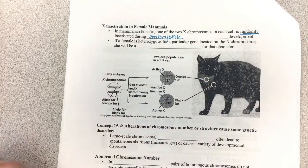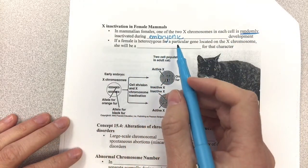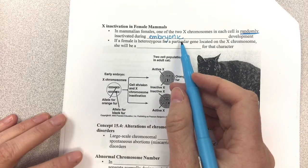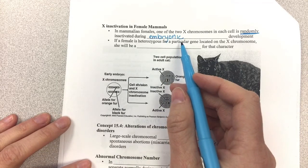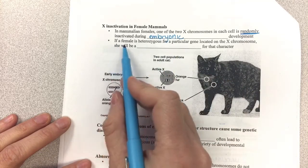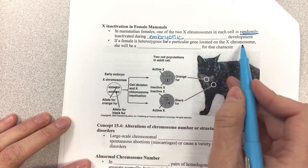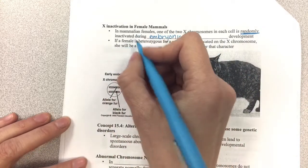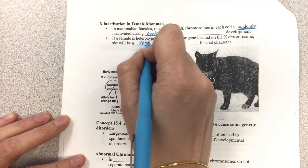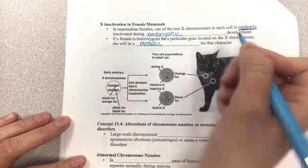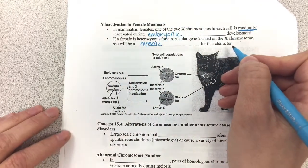So what happens is, it doesn't affect it if the female is homozygous, but if the female is heterozygous for a particular gene on the X chromosome, she will be what's called a mosaic for that character. So what does that mean?